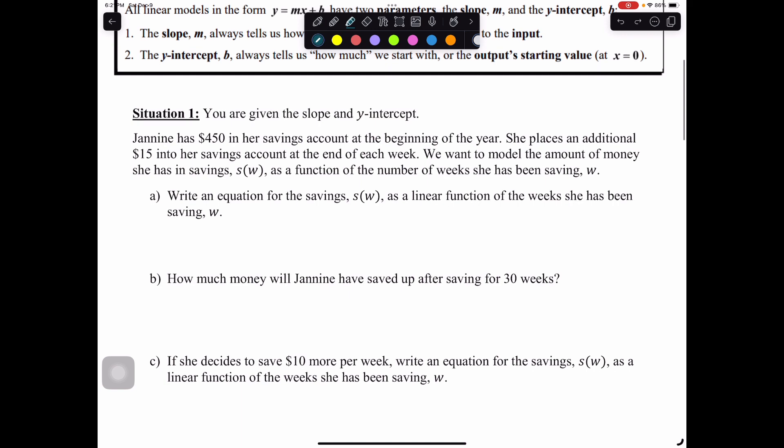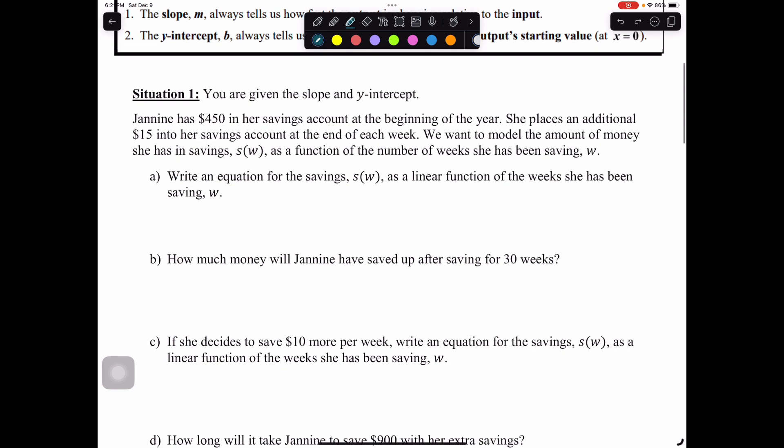In situation one, you are given the slope and the y-intercept. Janine has $450 in her savings account at the beginning of the year. She places an additional $15 into her savings account at the end of each week. We want to model the amount of money she has in savings, s of w, as a function of the number of weeks she has been saving, w.